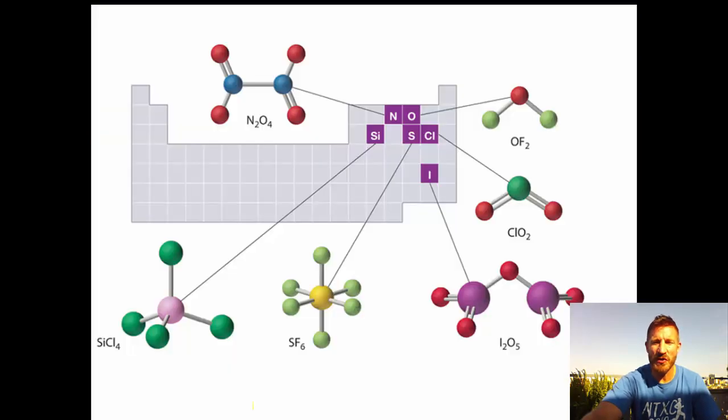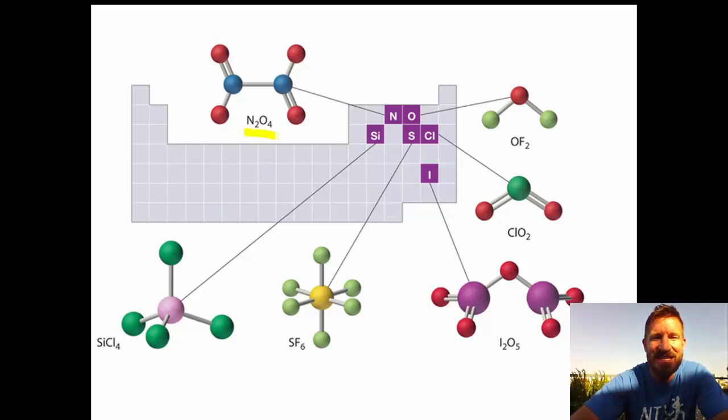The last thing we're going to do is look at the ones we looked at before. N2O4 would be dinitrogen tetroxide. We actually saw this one on the previous slide - this is silicon trichloride. This would be sulfur hexafluoride, diiodine pentoxide, chlorine dioxide, and oxygen difluoride. That's our introduction to naming two nonmetals together or type three compounds.